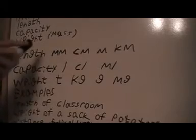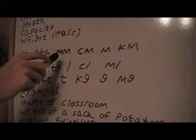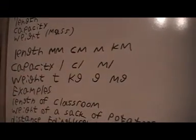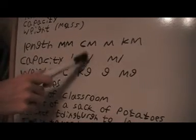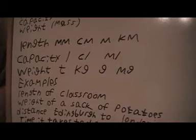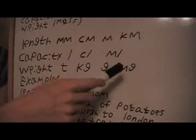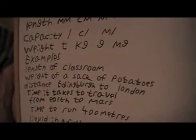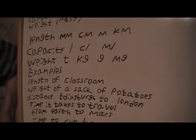Here are the different types of measurements we'll use. For length, we use millimeters, centimeters, meters, and kilometers. For capacity, we use liters, centiliters, and milliliters. And for weight, we use tons, kilograms, grams, and milligrams. Those are basically the different units we use for these different types of measurements.